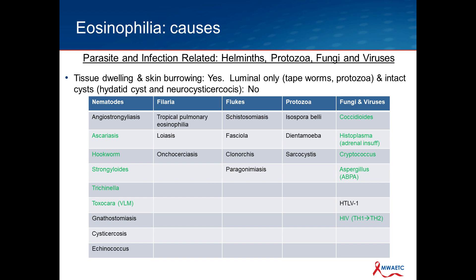Conditions in green are those more commonly encountered in patients residing in the United States. Among the nematodes: ascariasis, hookworms, Strongyloides, Trichinella — we have some in the northwest, in Alaska. Toxocara canis causes visceral larval migrans, more common in children than adults. Filaria, flukes, and protozoa are typically not pathogens you'd encounter unless the patient is from the developing world or has resided there for several months.